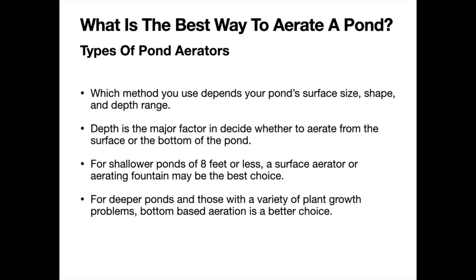Which method you use depends on your pond's surface size, shape, and depth. Depth is the major factor in deciding whether to aerate from the surface or from the bottom. For shallower ponds of around eight feet or less, a surface aerator or aerating fountain could make more sense. But for deeper ponds — six, seven, eight feet or more — surface-based aeration tools do not affect the bottom. They don't increase oxygen deep and low in the pond, which is very important, especially if algae or unwanted growth is a problem, since increasing dissolved oxygen at the bottom can help with nutrient issues and limit surface growth.